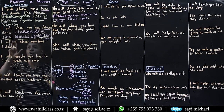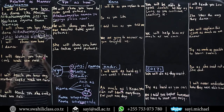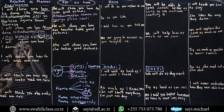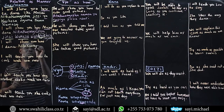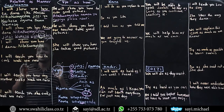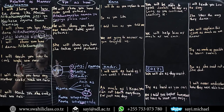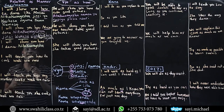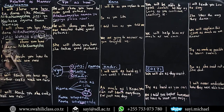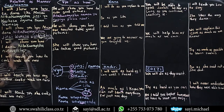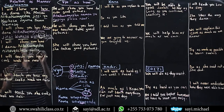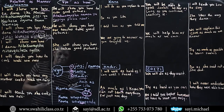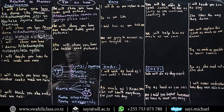Look at this sentence: I will show you how I dance. There's no external noun — not how Maasai dance, not how the teacher dance, not how my mom dance. So: nitakuonyesha ninavyo cheza ngoma. Ngoma is music or local dance in Swahili — to dance is kucheza ngoma.